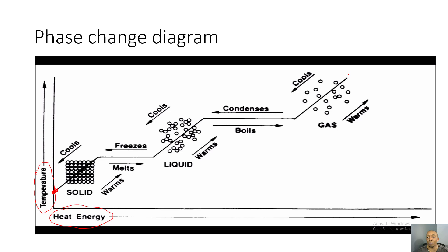We can also go down the phase change diagram, which means temperature is decreasing and heat energy is decreasing — remember, it's a direct relationship. The gas particles begin to cool off and as they cool they condense, starting to turn into a liquid, and they continue to condense until all the gas particles have condensed into a liquid.